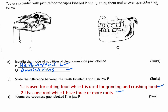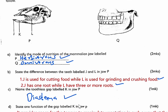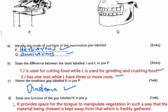Part C asks: name the toothless gap labeled K in jaw P. The name is diastema. Part D asks: state one function of the gap labeled K. The function of the diastema is to provide space for the tongue to manipulate vegetation in such a way that the material being chewed is kept away from the one which is freshly gathered. We get one mark.